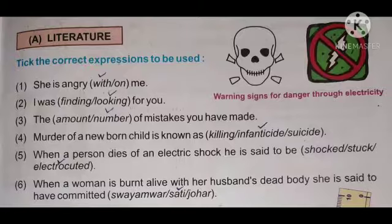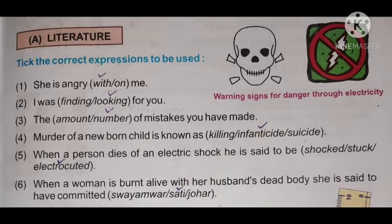Section A: Literature. Tick the correct expressions to be used. Students, here are various expressions given. You all have to choose the correct expression. So first: 'she is angry with me' — the correct word is 'with'.